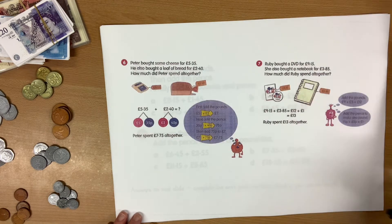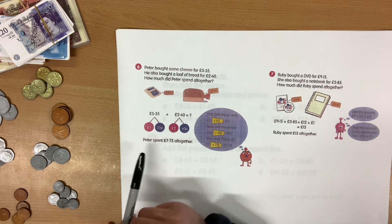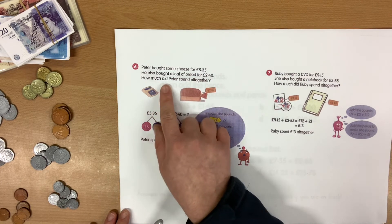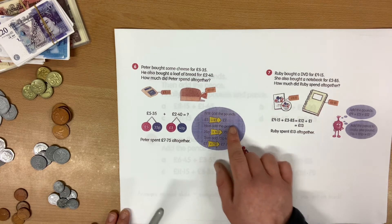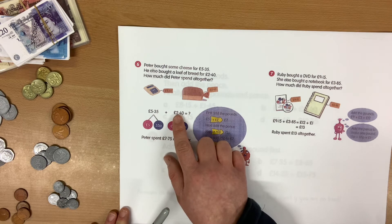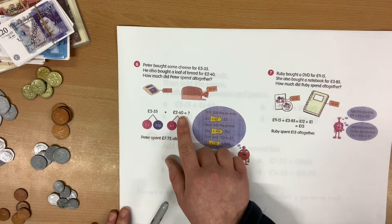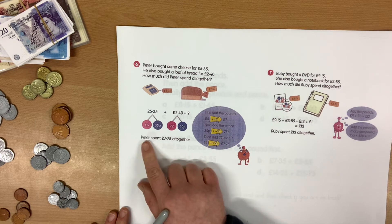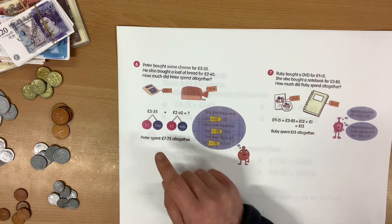Moving on to questions six and seven. Question six: Peter bought some cheese for £5.35. He also bought a loaf of bread for £2.40. How much did Peter spend altogether? Our helpful bubble says first add the pounds: £5 add £2 gives us £7. Next, add the pence: 35p add 40p gives us 75p. Adding them together, we know that Peter spent £7.75 altogether.